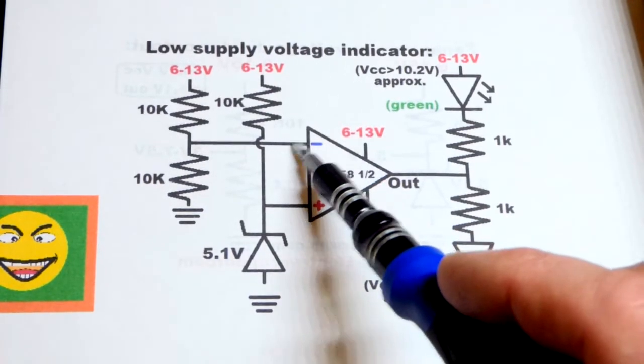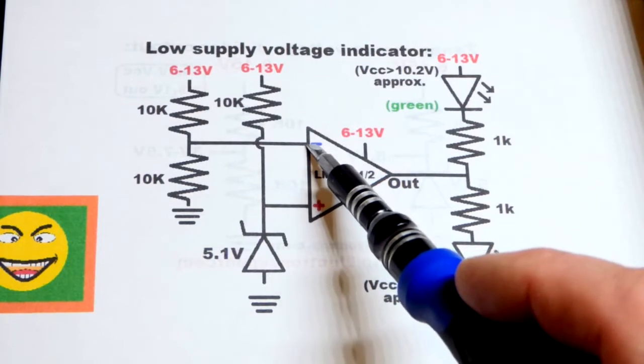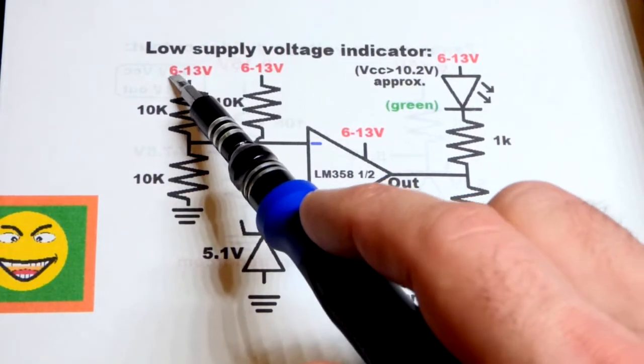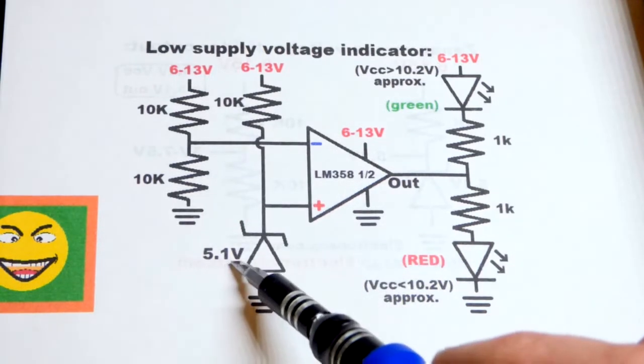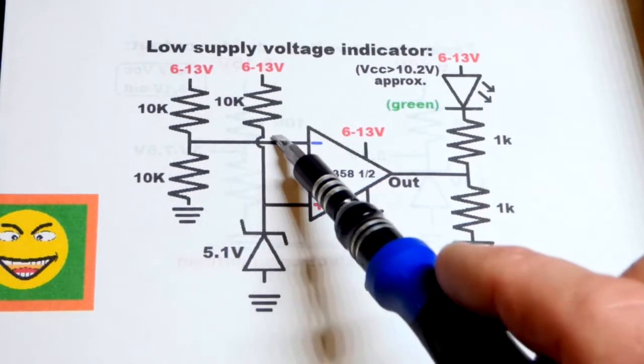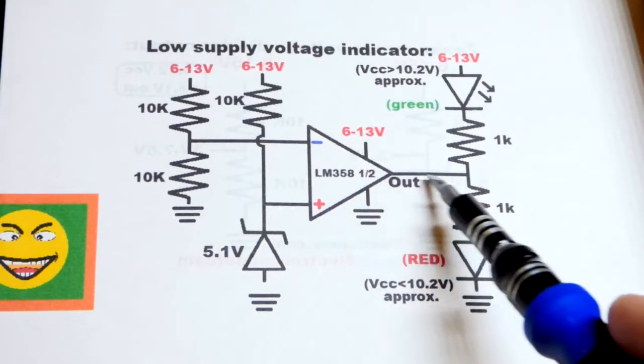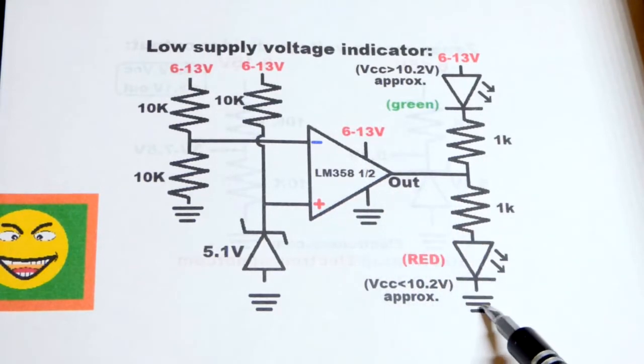The voltage going to the inverting input is why it's an inverting comparator. When the voltage at the inverting input is lower, such as at six volts we'll have three volts, that's lower than 5.1 volts, then the output is going to be high and the red LED is going to light up.